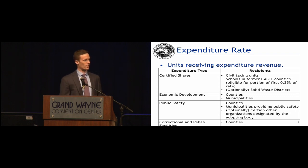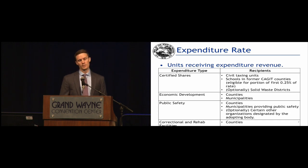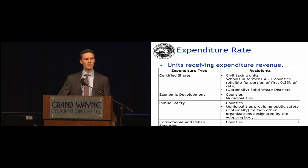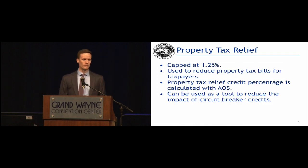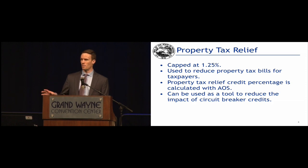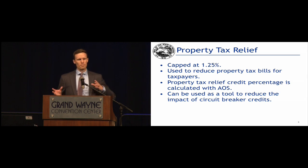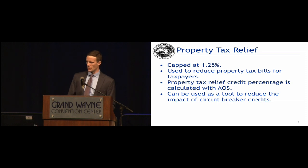New for this year is the fourth option: correctional and rehabilitational facilities. The money from a tax imposed for this purpose will go exclusively to the county government. I know we've done much more extensive presentations on income tax, and we have more detailed information available on our website. The other broad category besides expenditure rate is property tax relief.